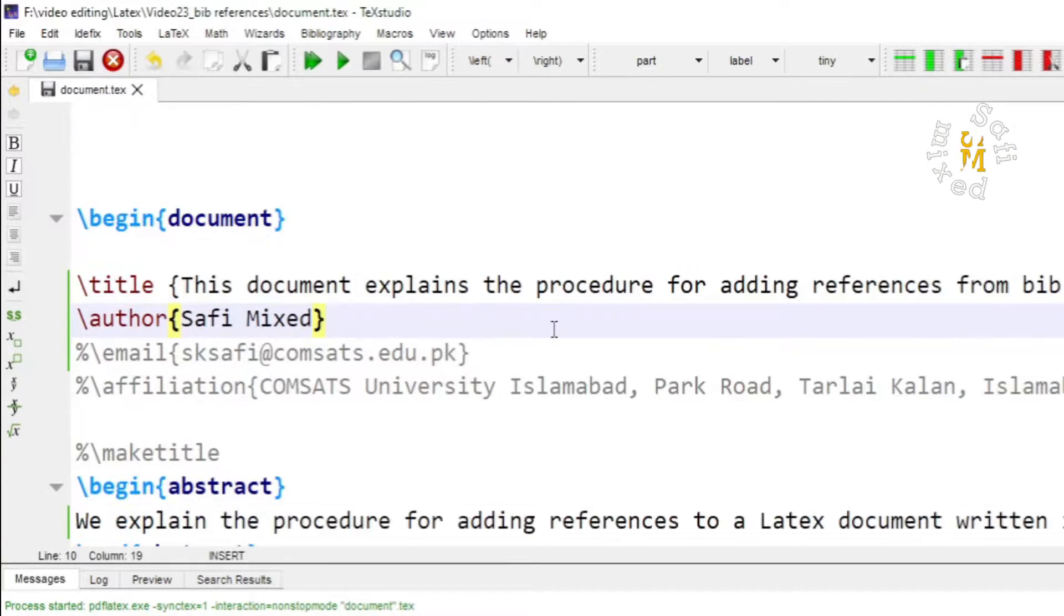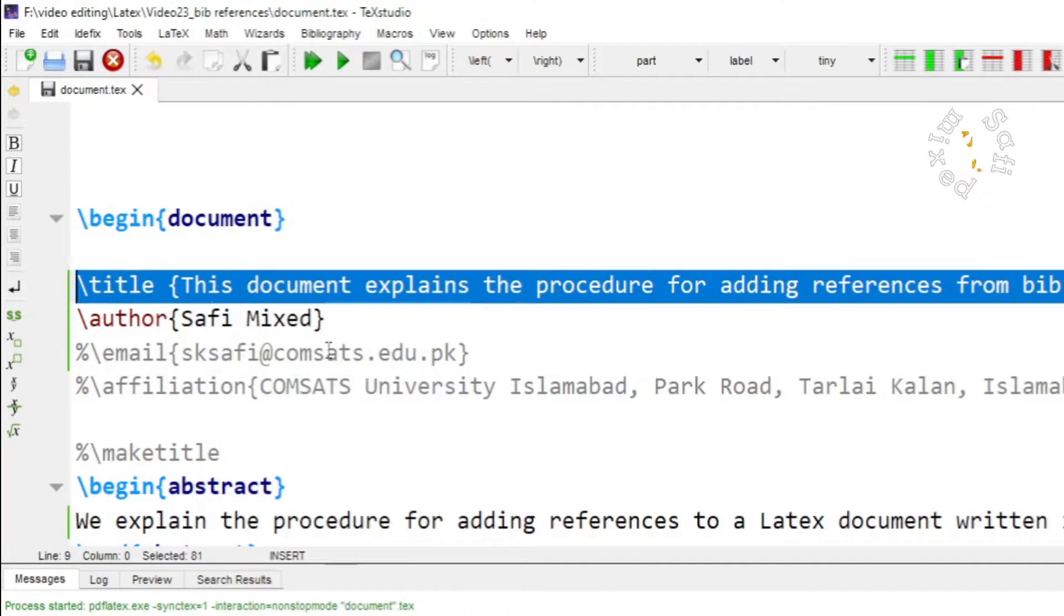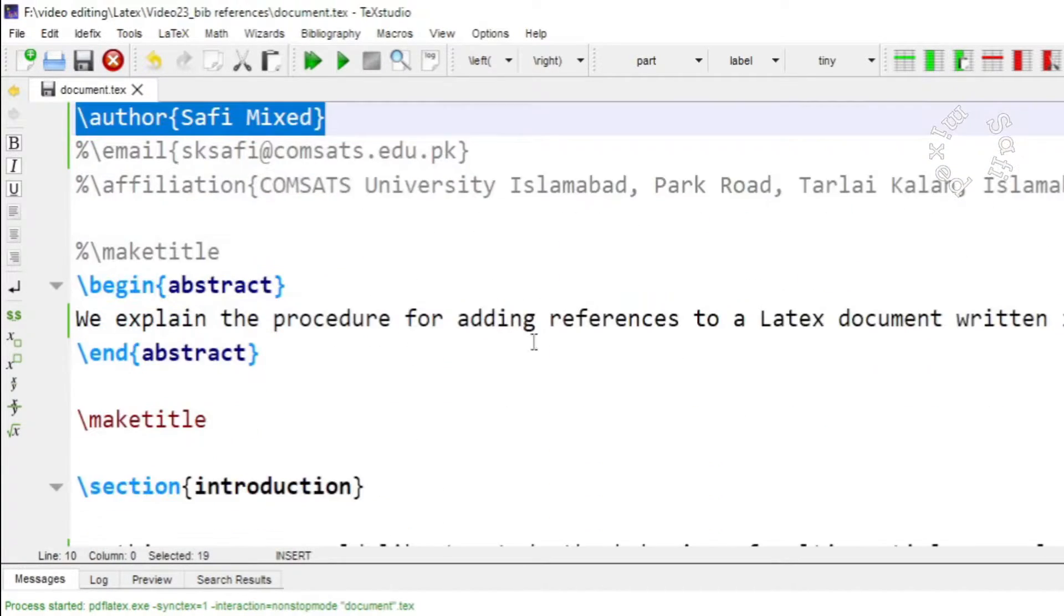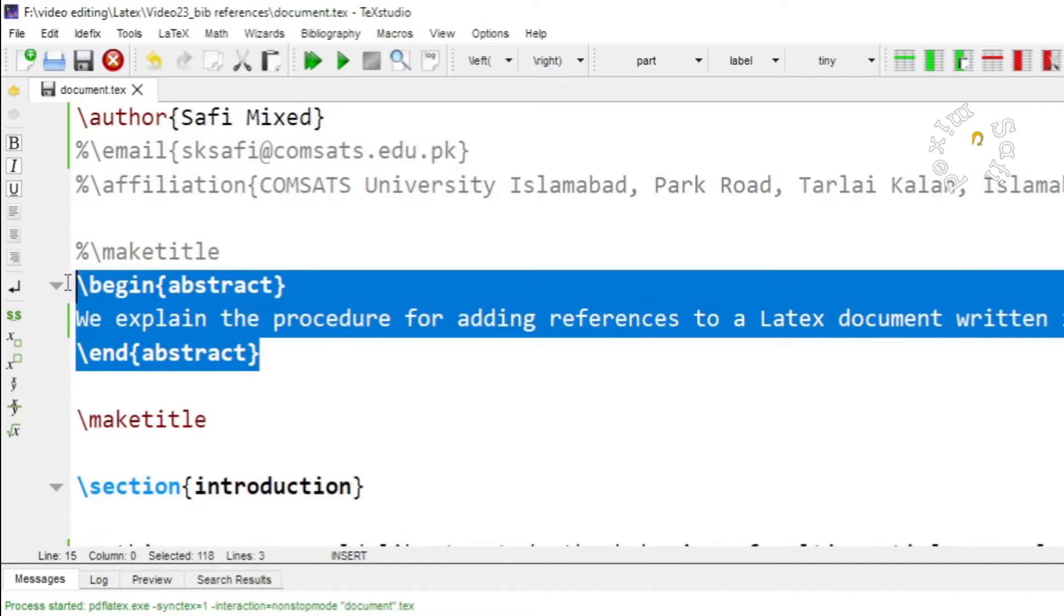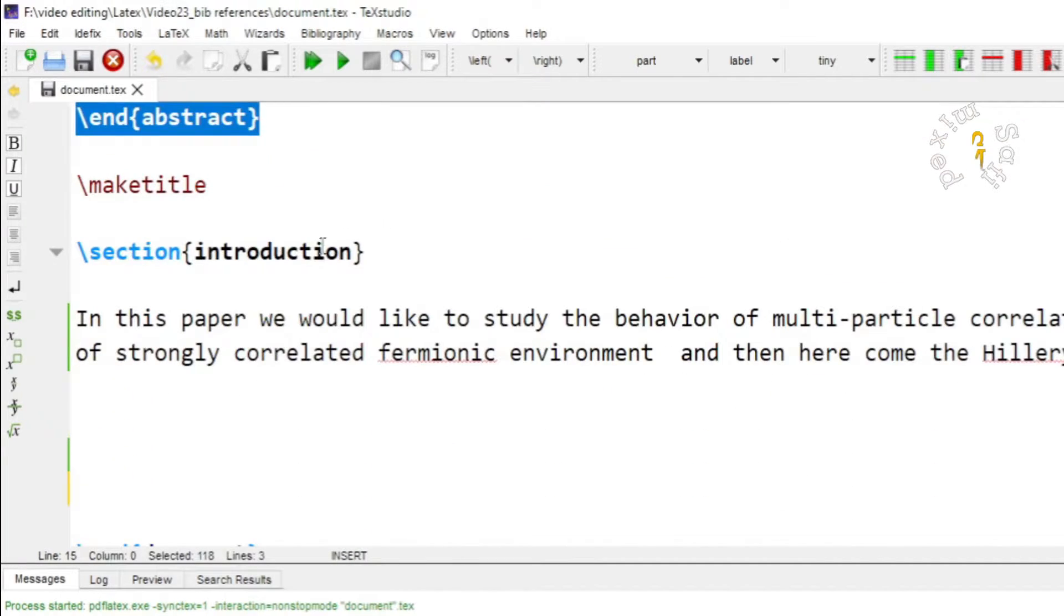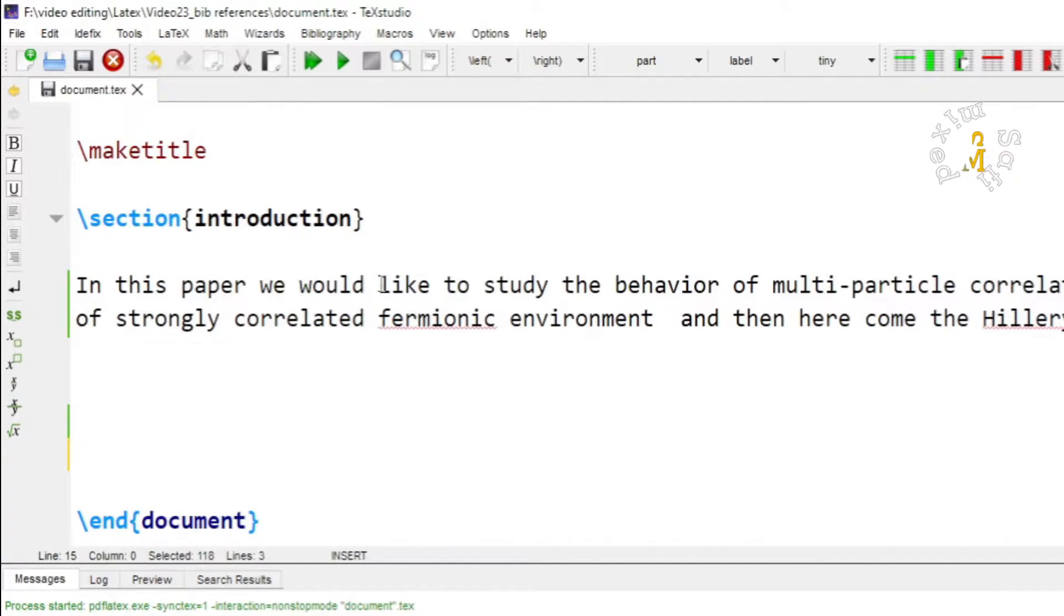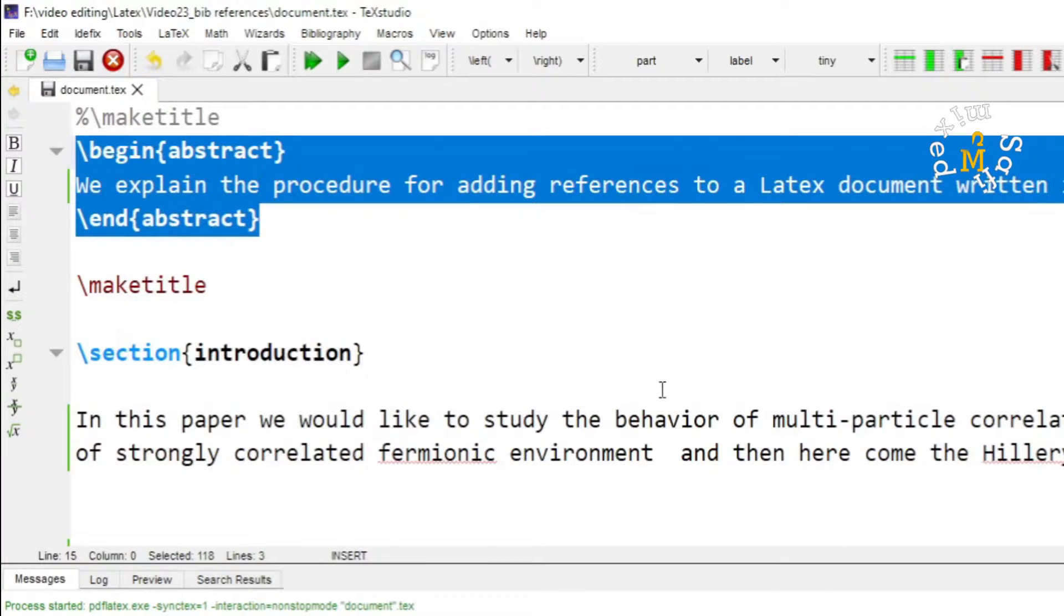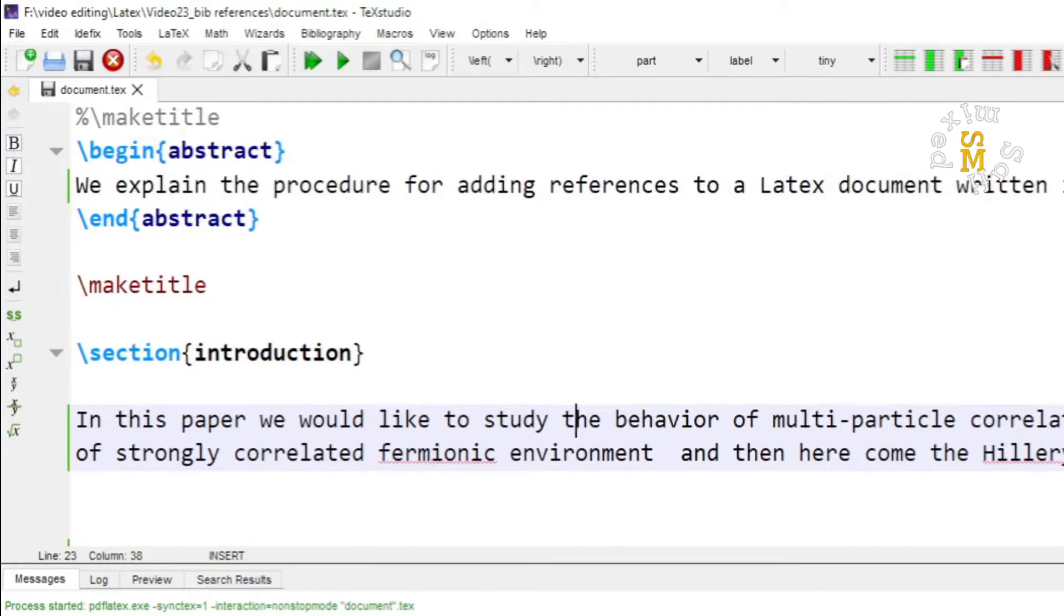I have already developed the document in which I have added some arbitrary text as title, author, abstract and have also added some body text in the introduction section and I want to add references to this file from a bib text.